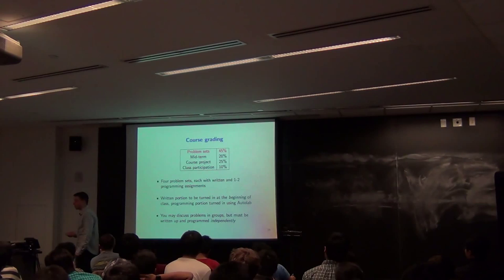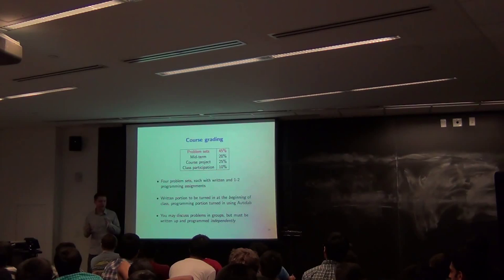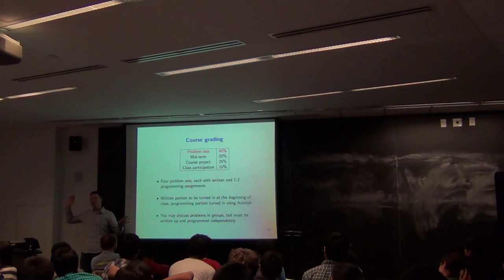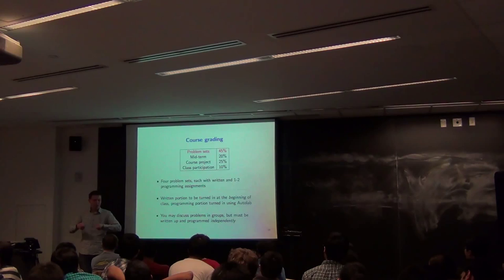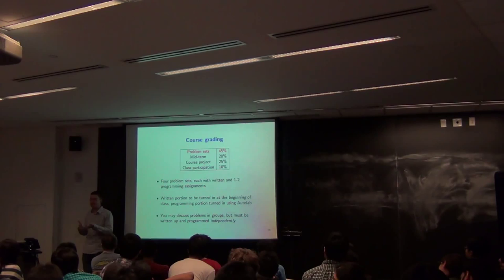There will be four problem sets throughout the course — one of the main components, testing and extending your knowledge through written and programming assignments. Written portions are turned in at the beginning of class; programming parts are submitted through Autolab, CMU's automated grading system. This means you can submit as many times as you want before the deadline, see your score, and resubmit if you fail. The downside is there's no partial credit for random code — what matters is whether your program actually works.